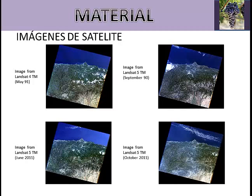ENVI was the software used to develop this study. This study was developed with four Landsat 4 and 5 images from the TM sensor. Those images have a spatial resolution of 30 meters and a spectral resolution from 0.45 to 2.35 micrometers. Two of them are from the 90s and the other two are from 2011. These pairs of images were selected to help the method detect vineyard class due to the vineyard phenological change between images from spring and autumn.